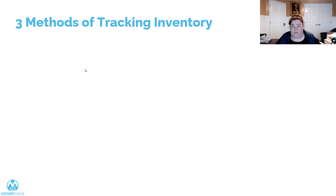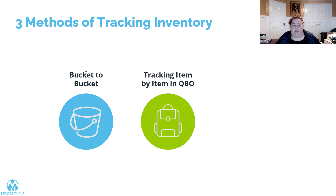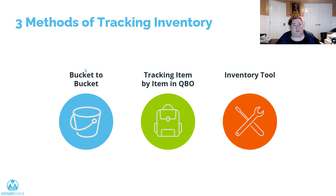There are really three different options for tracking inventory. First is the bucket-to-bucket method, which is what this video focuses on. Second is the tracking item-by-item method in QuickBooks Online, which you can find in another video. And third, you can use an inventory tool — either a third-party tool that integrates with QuickBooks Online or one that doesn't — as an operational inventory tool that also tracks cost of goods sold.